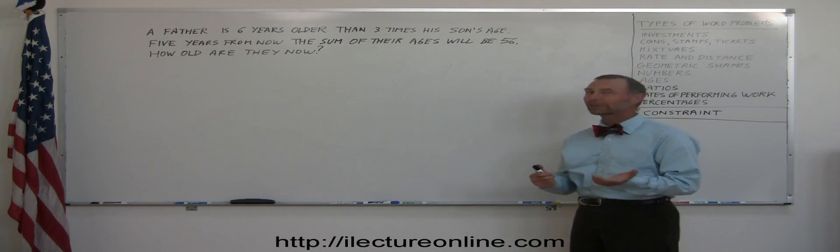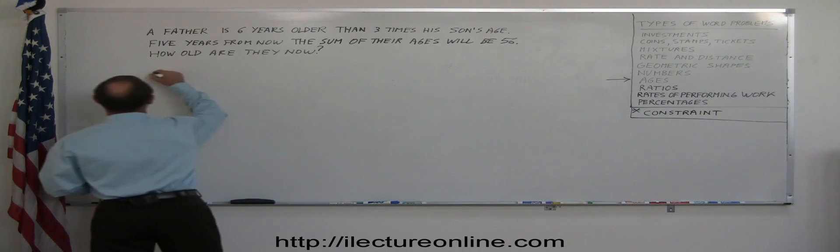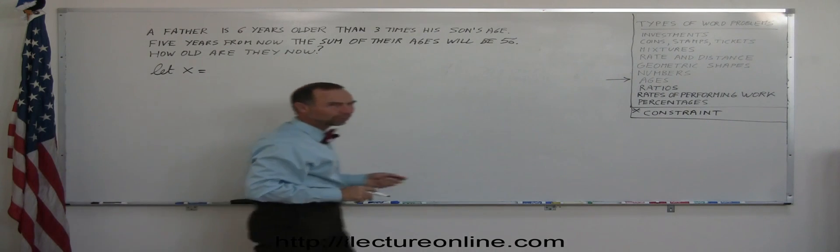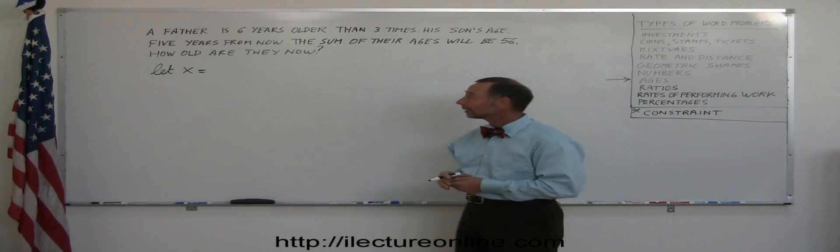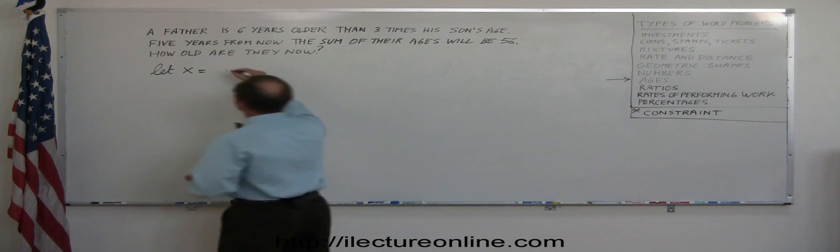Again, you look at that and go, oh, where do I start? But if you're not sure, always start here. Let X equal. And you always want to let X equal the youngest. In this case, it would be the son's age. So son's age today.